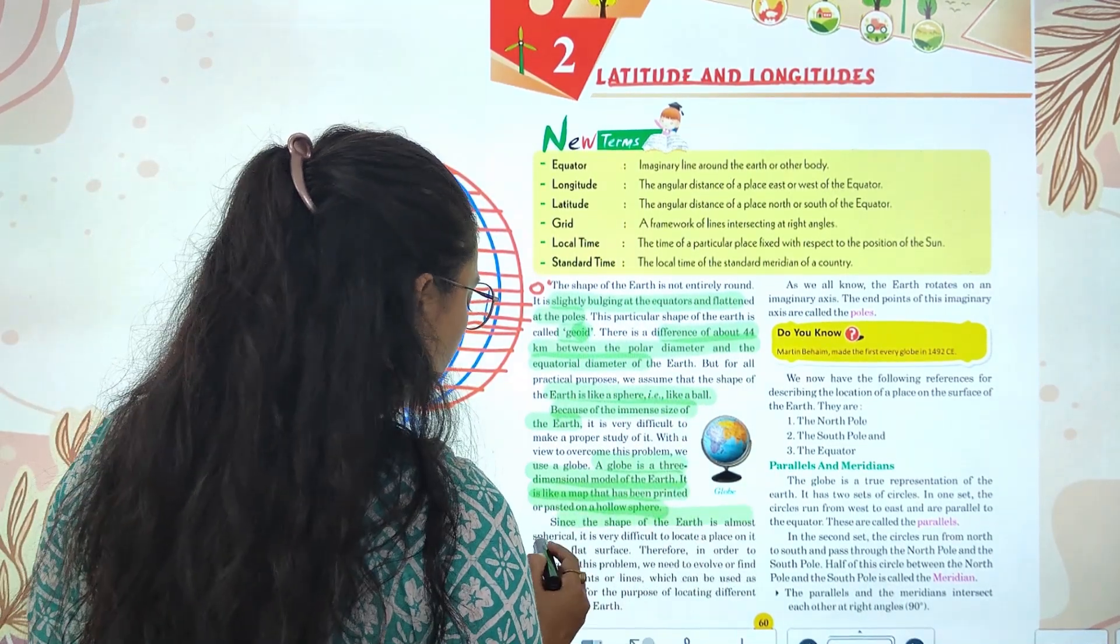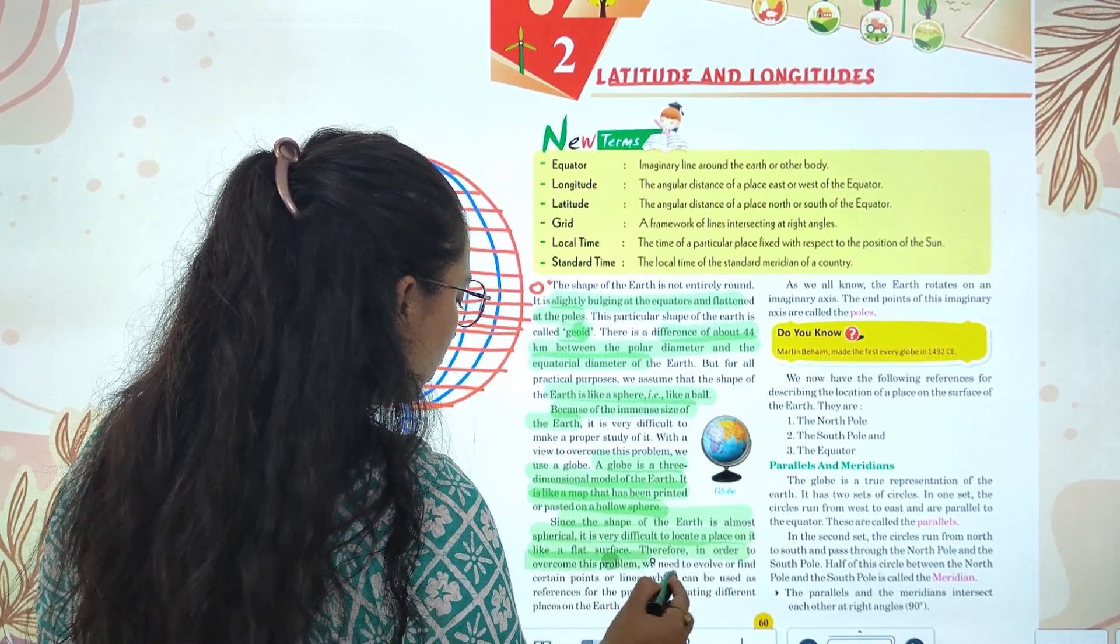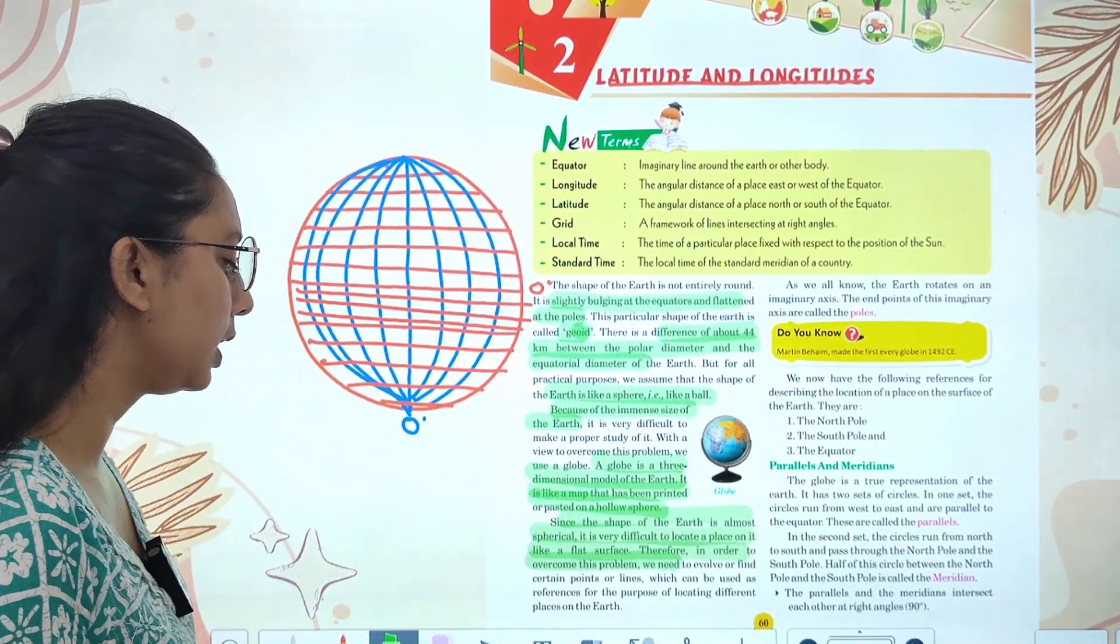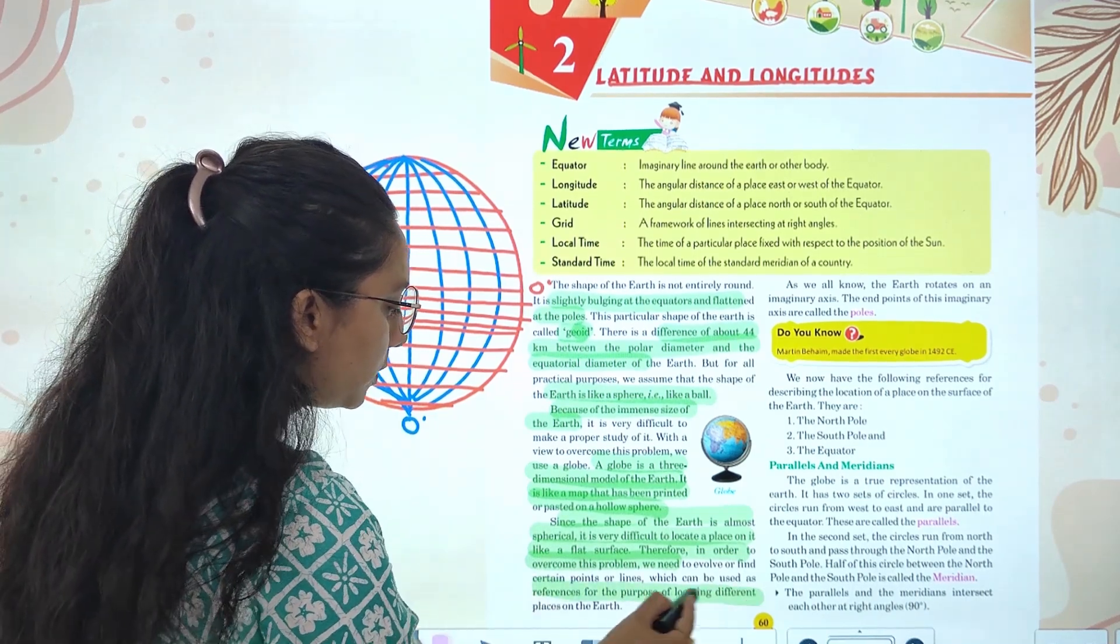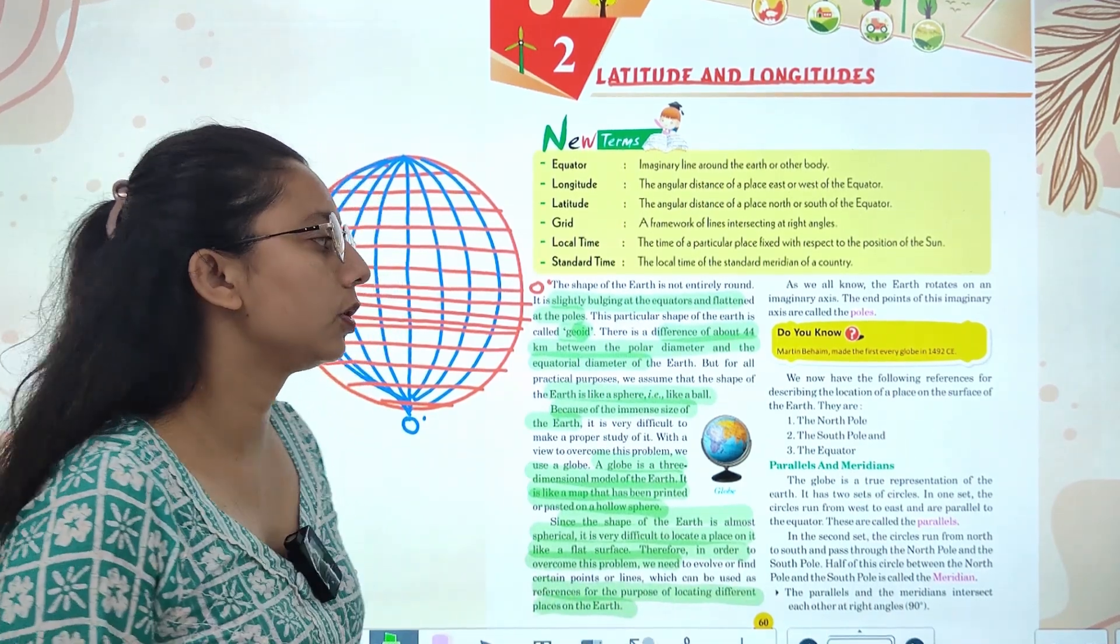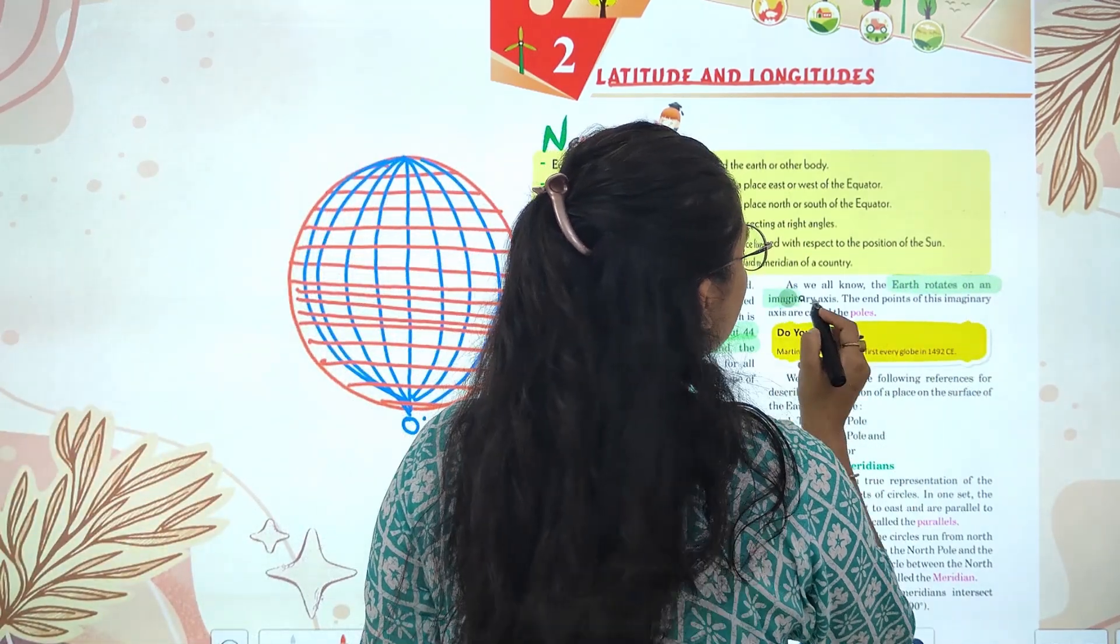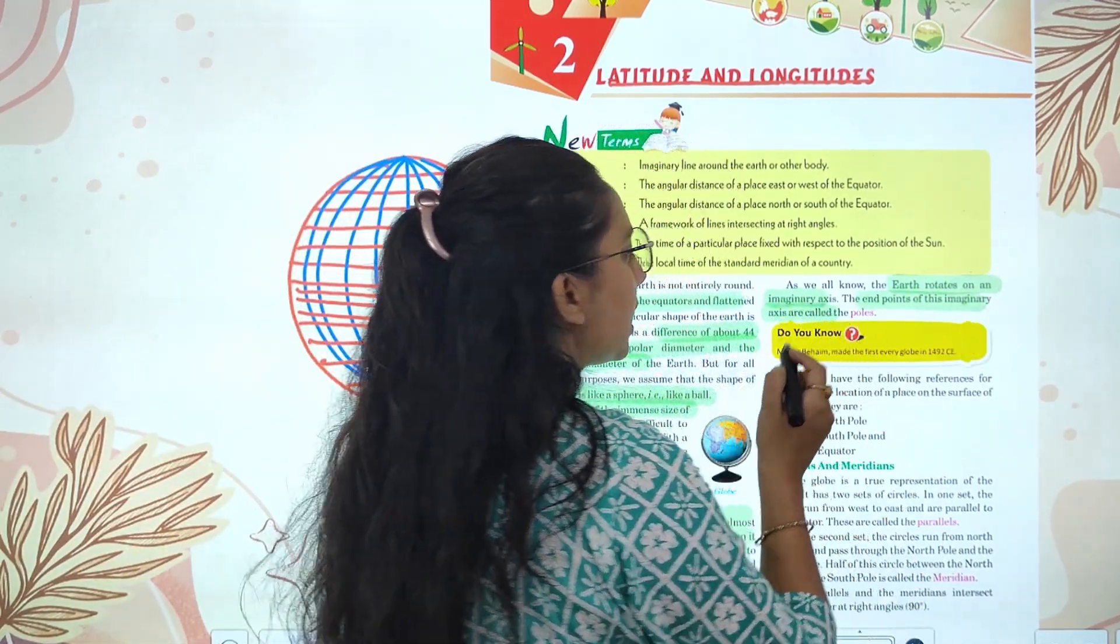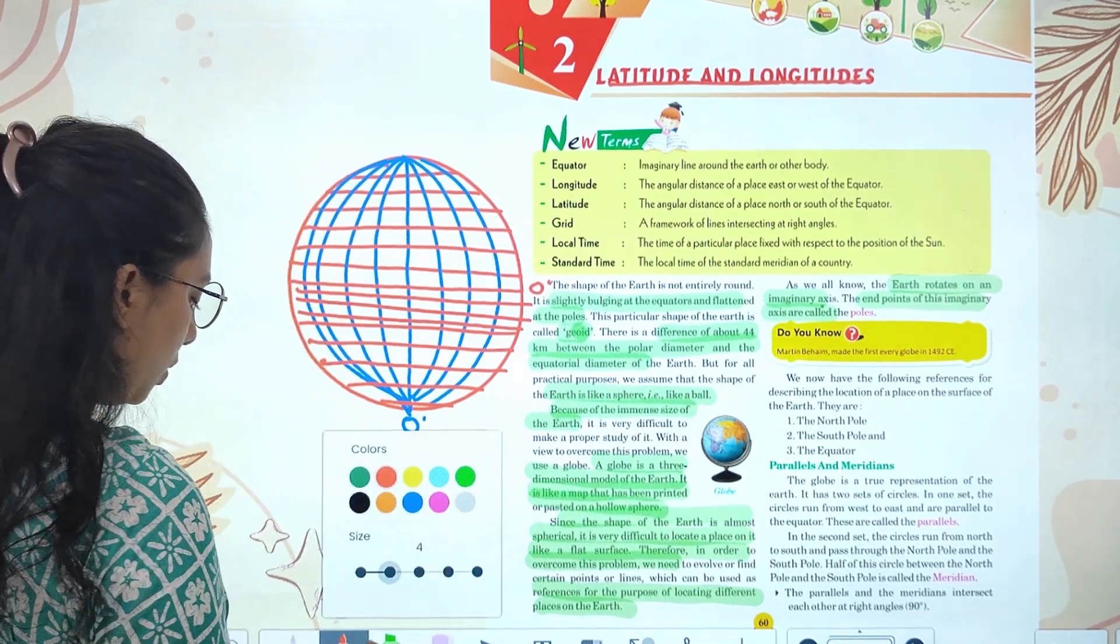Since the shape of the Earth is almost spherical, it is very difficult to locate a place on it. Therefore, in order to overcome this problem, we evolved and find certain points and lines which we can use as reference for locating different places. As we know, Earth rotates on an imaginary axis and the end points of this imaginary axis are called the poles.